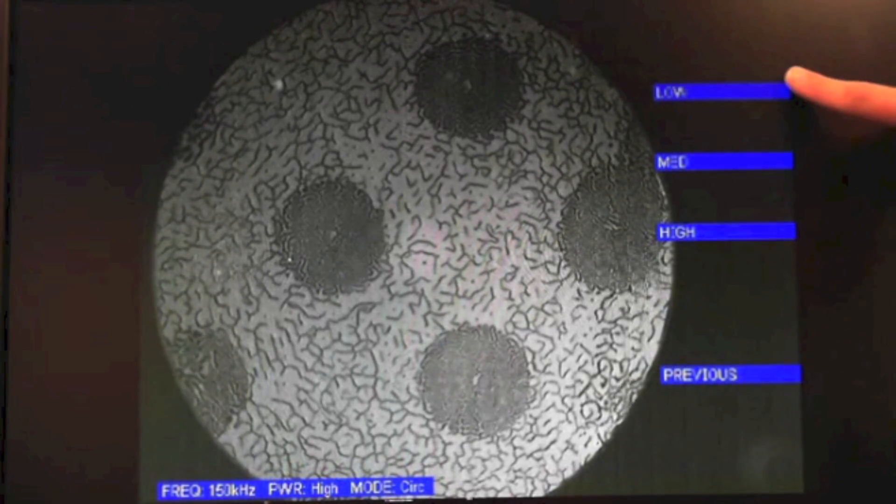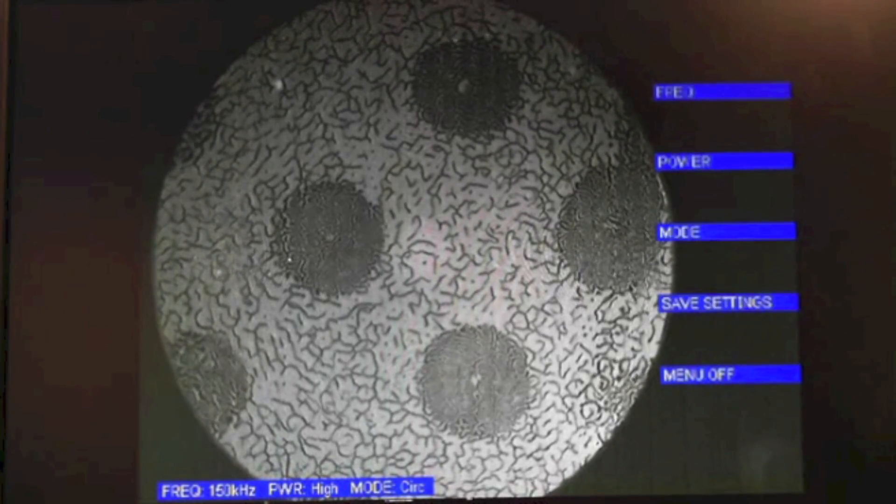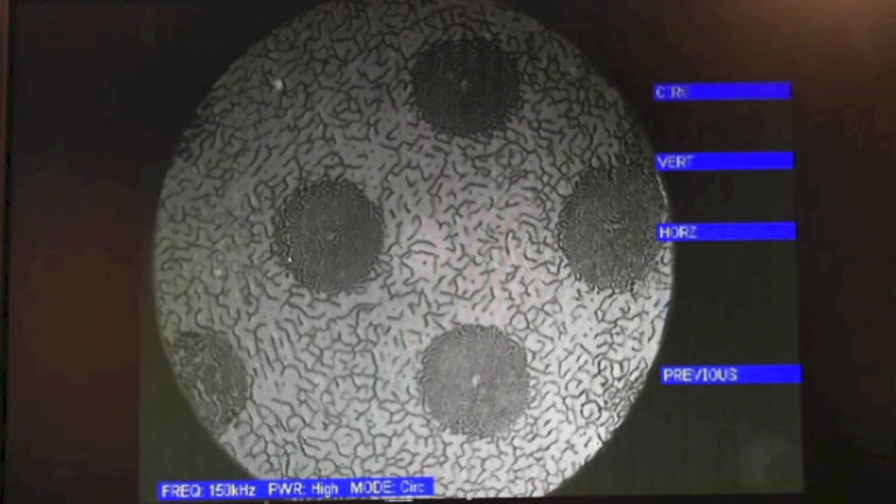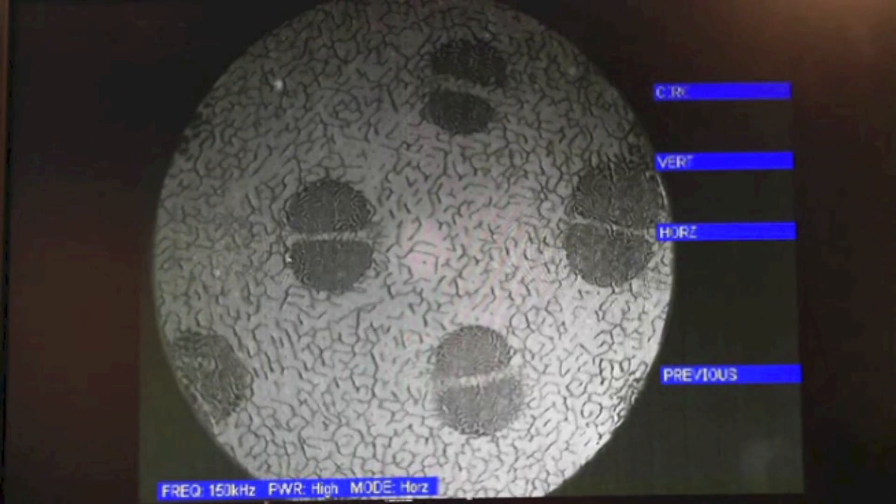Power levels include low, medium, and high. Mode control options include circular mode, vertical mode, as well as horizontal mode.